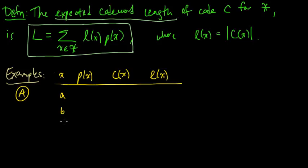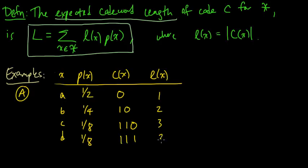So x in our little example from before took these four values a, b, c, or d. And let's take the same probabilities, one half, one quarter, one eighth, one eighth. And we had the code words zero, 10, 110, 111. And of course, the length of these is 1, 2, 3, 3.